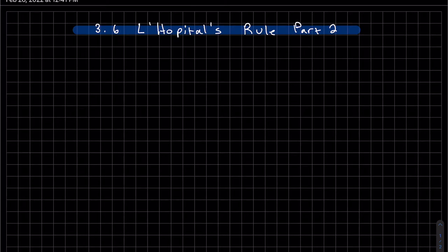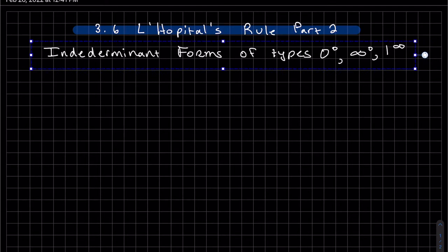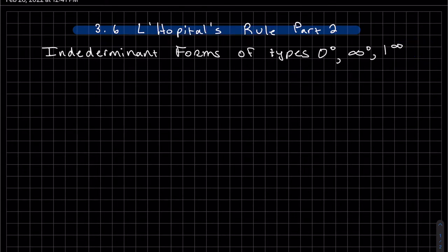This is part two of L'Hopital's rule. This next part is covering indeterminate forms of these three types: 0 to the 0, infinity to the 0, and 1 to the infinity.